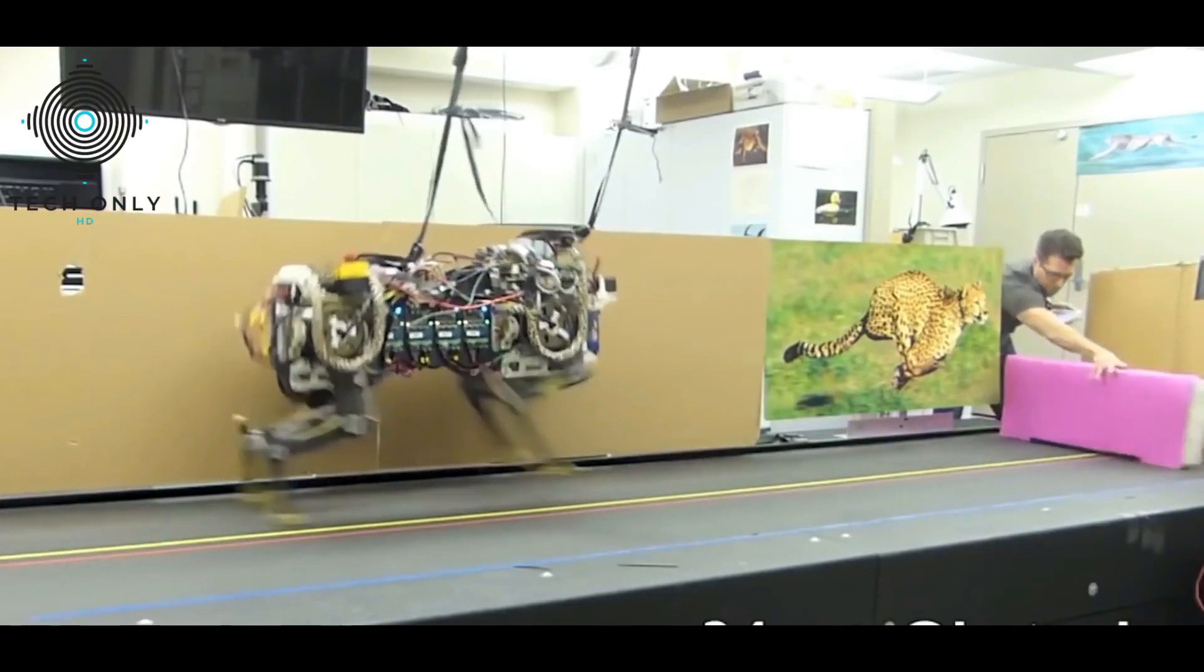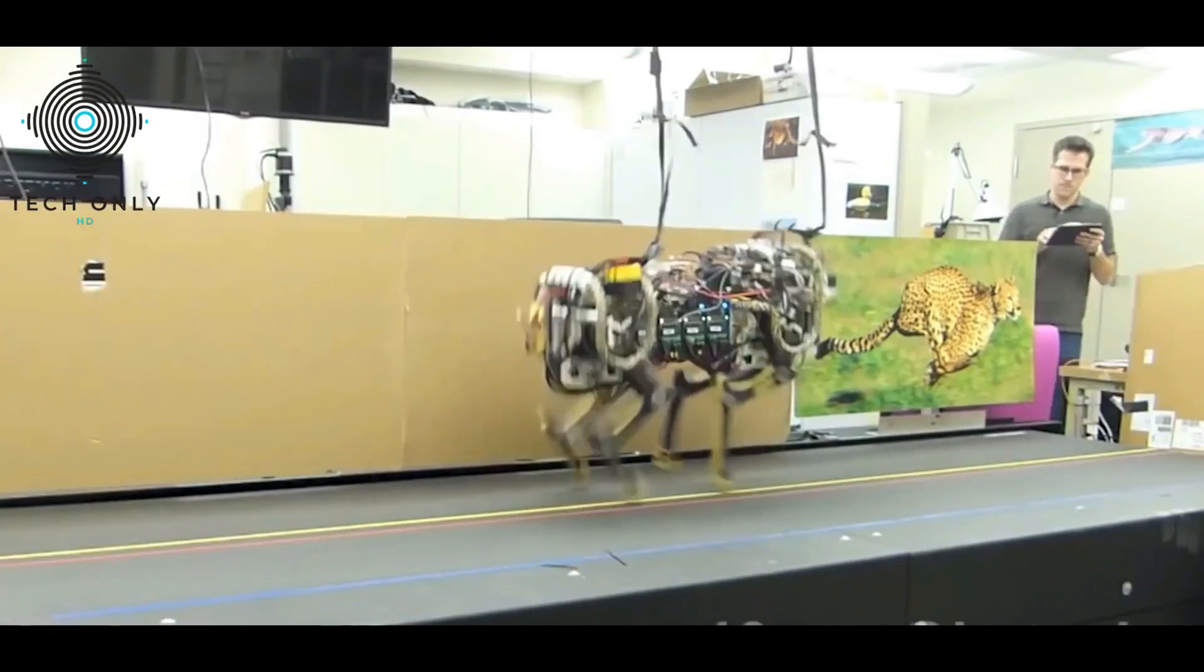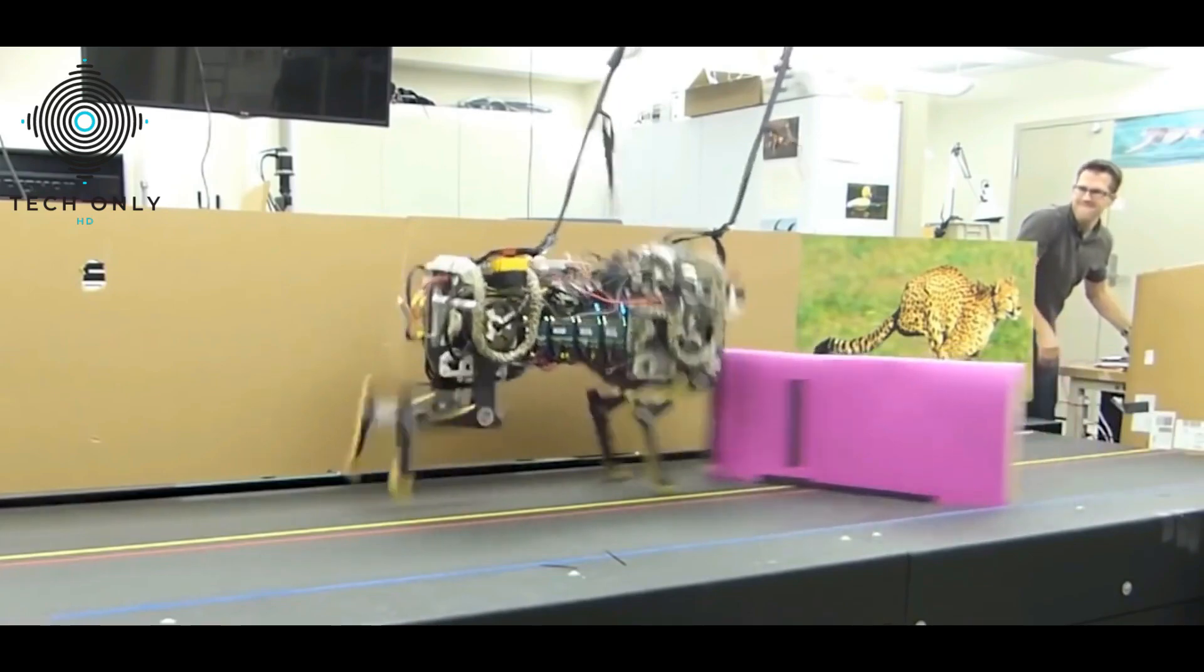With batteries fully charged, at top speed, the Cheetah runs at 29.2 miles per hour and jumps over obstacles 16 inches tall.